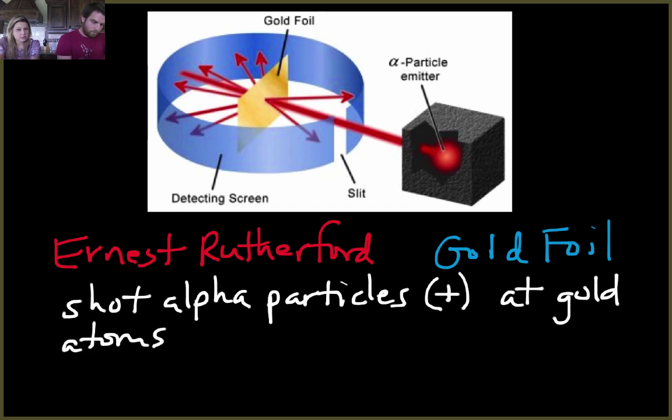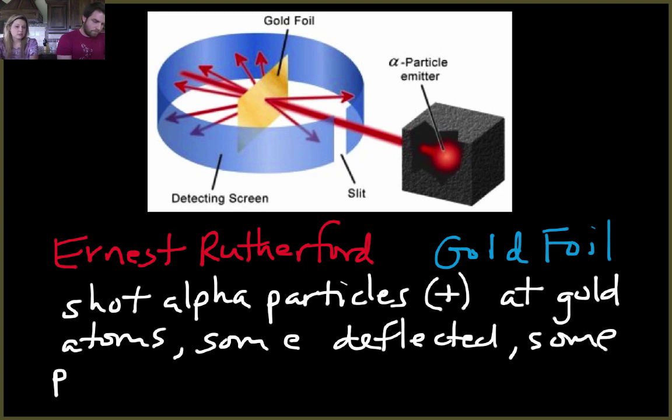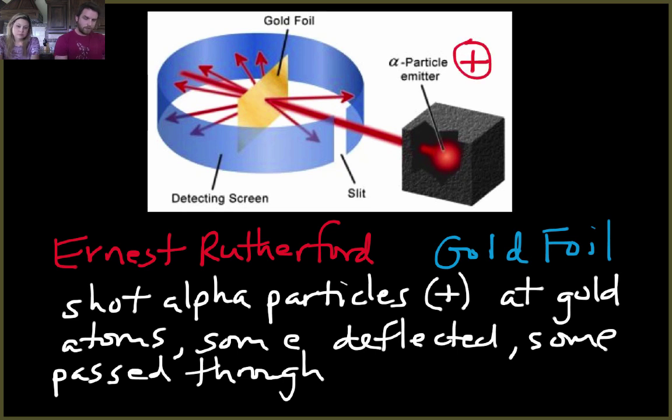If Thompson's model was correct, they would have all been deflected back. But because some passed through, it meant that the atom was mostly empty space. When they hit the nucleus, they were deflected back or bounced off, meaning there must be something dense in the center, and it must be positively charged to deflect the positive particles. There was a dense positively charged center, which we now call the nucleus.